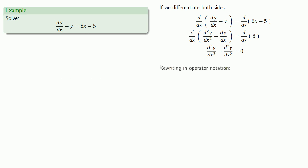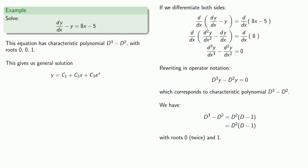So rewriting our differential equation in operator notation, and that corresponds to characteristic polynomial D³ minus D². We find the roots, which will be 0 twice and 1. And this gives us our general solution y equals c_1 plus c_2x plus c_3e^x.